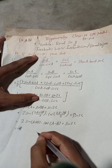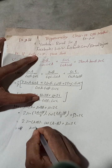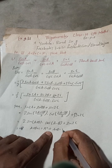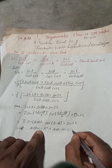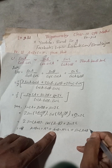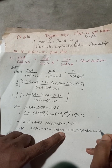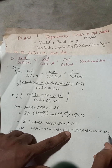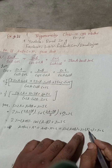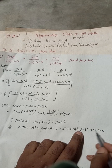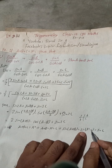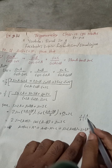Now, given that A plus B plus C equals pi radian, this means A plus B equals pi minus C. Taking sine of both sides: sin(A+B) equals sin(pi − C), which equals sin C, because for pi minus C (second quadrant), sine is positive.